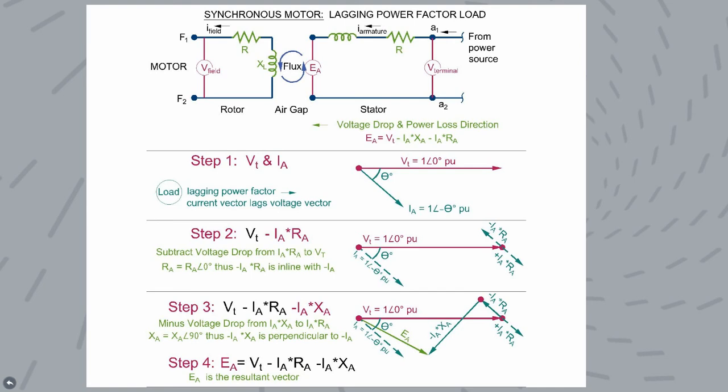Voltage is being subtracted as you move from the terminal back to the motor. Since RA is a pure resistive loss, its angle is zero degrees. Thus, when the armature current is multiplied by the resistance, an angle of zero degrees is added to the armature current.